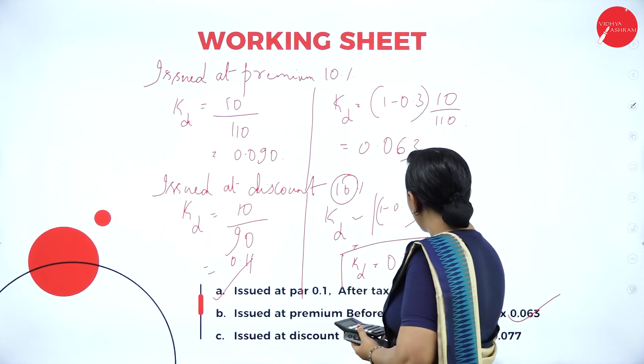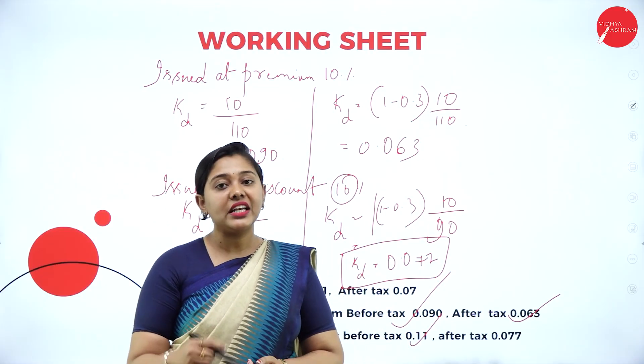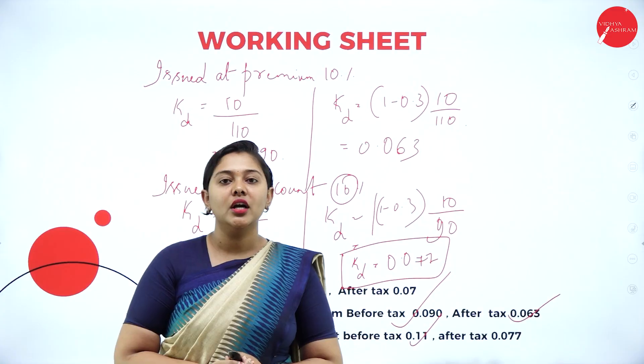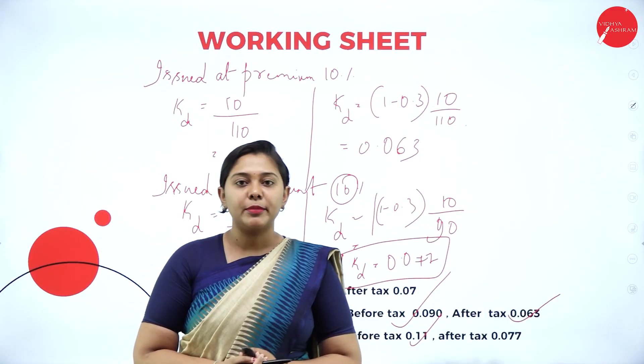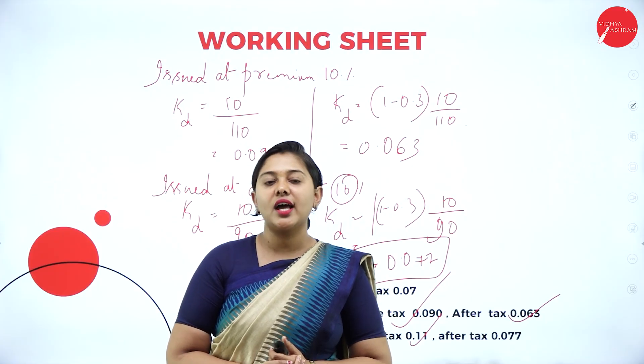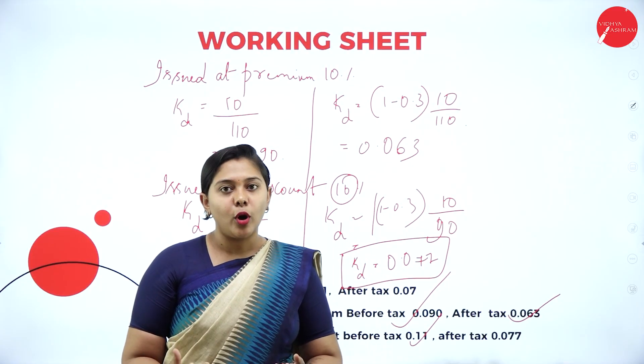This is the cost of debt problem — the irredeemable problem — issued at par, premium, and discount, before tax and after tax. Two problems were taken in today's class. Hope the session was very interesting and you have learnt the problems. That's it for today's class — hope there is clarity on irredeemable debentures for you all. Smile is the biggest jewel you can wear, people. Keep smiling. Thank you.